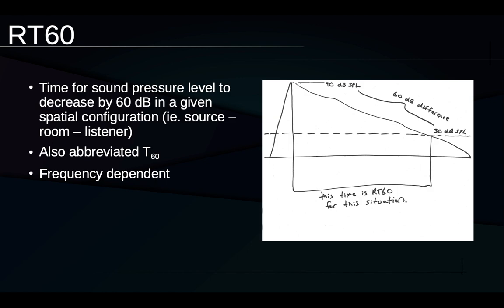This is also sometimes abbreviated T60, and it's frequency dependent. So every space will have a somewhat different RT60 at different frequencies because, as we saw in the previous slide, the materials in the room respond differently at different frequencies. The air also responds differently at different frequencies. High frequencies are attenuated more rapidly.